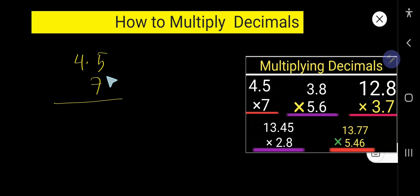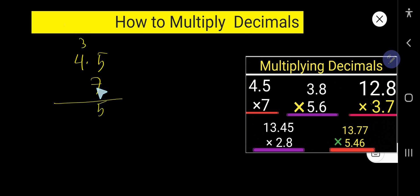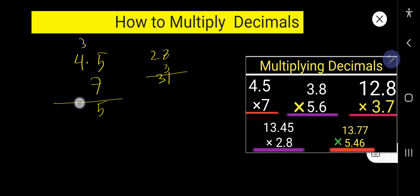To understand how to multiply decimals, first you need to ignore the decimal and multiply as normal. So, 7 times 5 equal to 35. Write 5, carry 3. 7 times 4, 28 plus 3, that gives us 31.